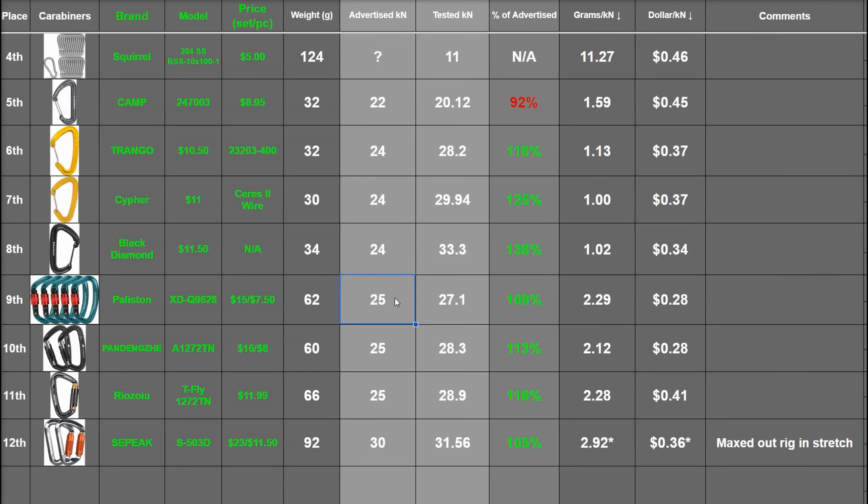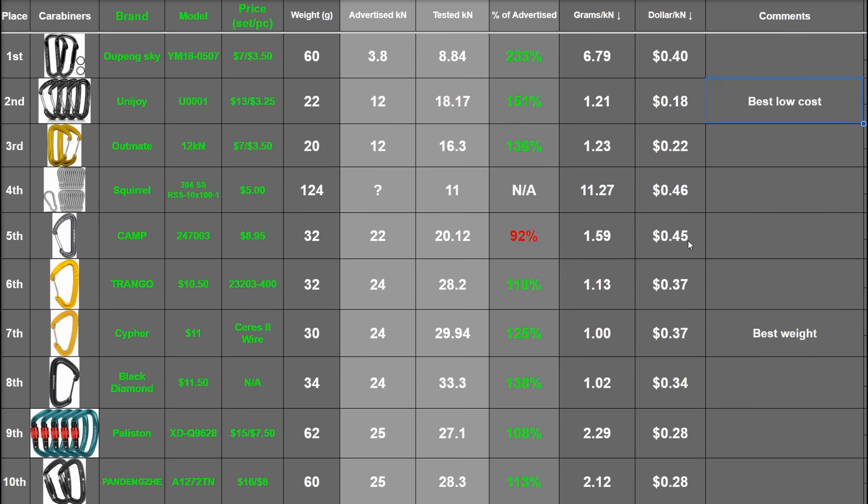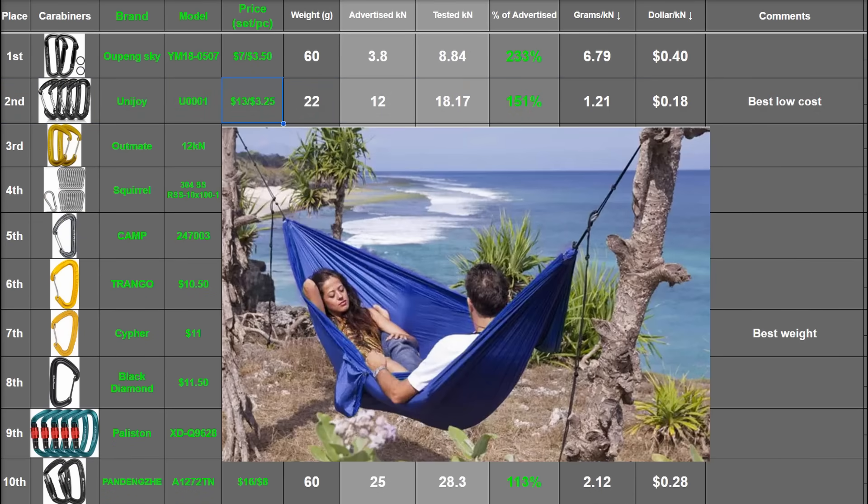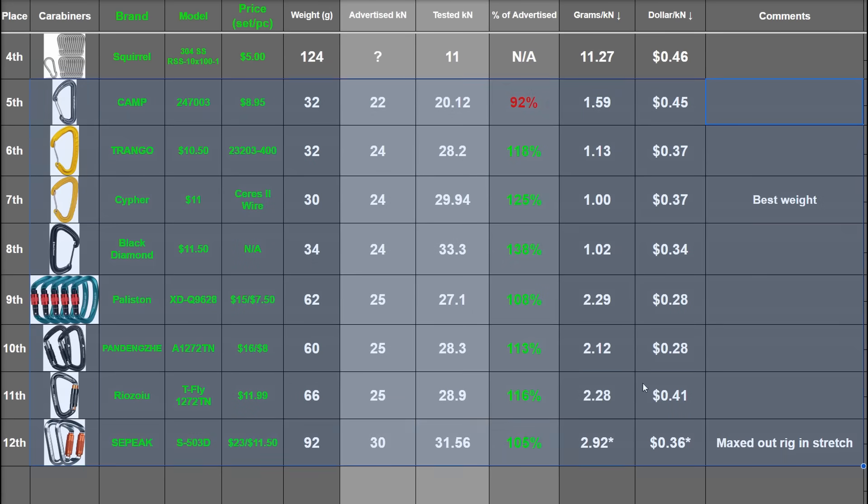The category winners, though, are as follows. Best performance to weight, the Cypher series 2 wire. I prefer wire gates anyways, just more simple and get hung up on ropes a lot less. The forging design on this appears to be superior and pays off being lighter and still massively strong. Best low cost performer, that's Unijoy, punching well above its weight. I'd 100% hang a two person hammock from these, no problem.